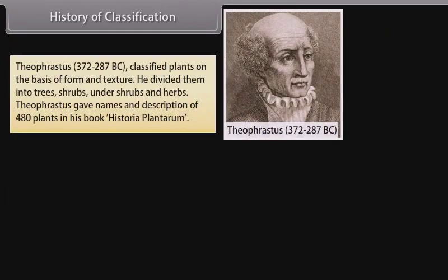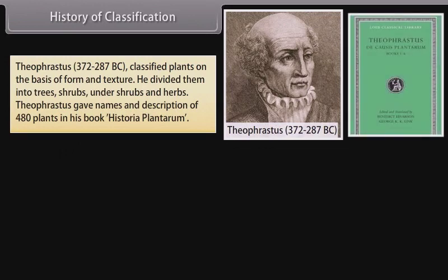Theophrastus (372–287 BC) classified plants on the basis of form and texture. He divided them into trees, shrubs, undershrubs, and herbs. Theophrastus gave names and descriptions of 480 plants in his book Historia Plantarum.